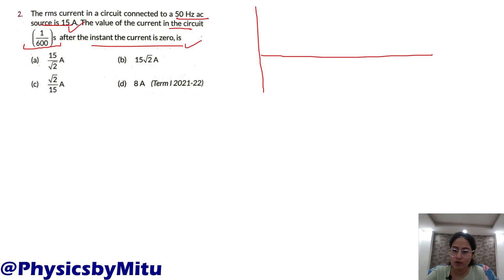How do we plot this? What is the equation of alternating current? I equals I naught sine omega t. The sine graph is like this, right? Sine zero is zero.